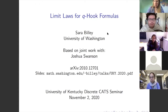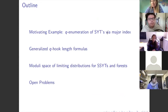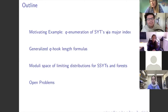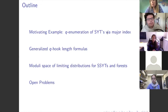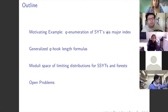Here's the overview of the talk. Over the last couple of years we've been looking at standard Young tableaux and the major index statistic, and how you can look at the Q-enumeration of those things as a random variable over standard Young tableaux. We've been getting into more and more generalizations — these are generalized hook length formulas. The new paper covers the moduli space of limiting distributions for two special cases: semi-standard Young tableaux and forests. There's also room for people to get involved through open problems.